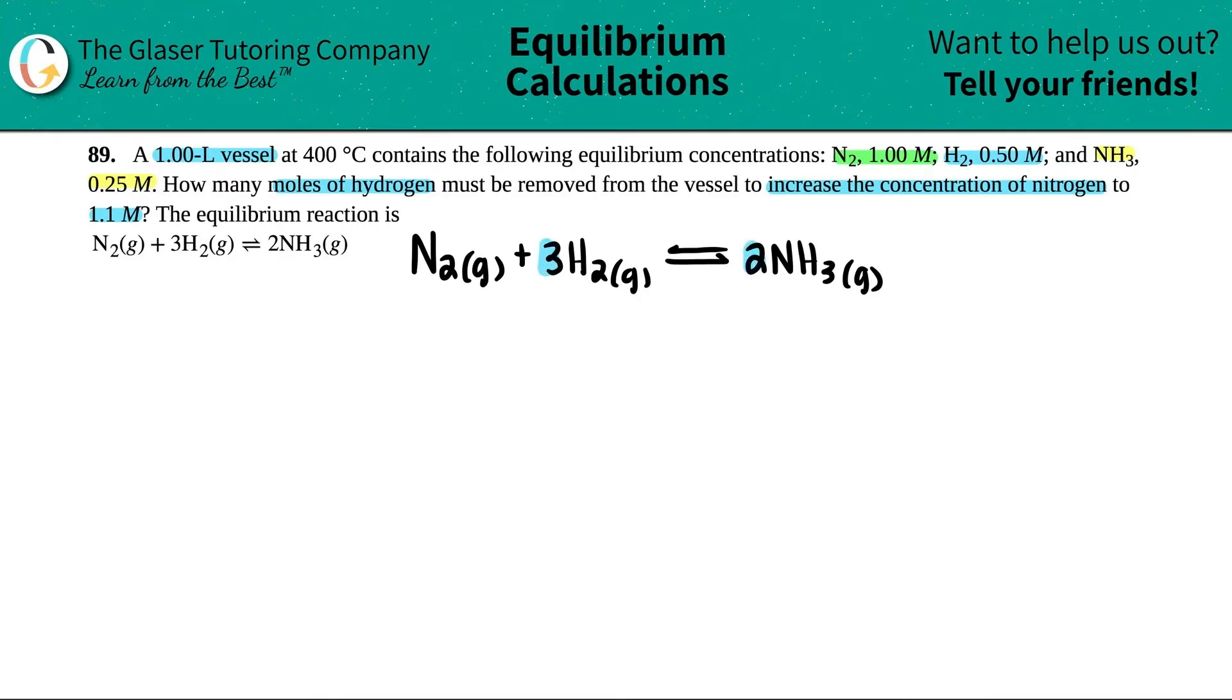I already see that we have coefficients here, so this is going to be a balanced equation. Since we're dealing with equilibrium and they gave us equilibrium concentrations, what's the K value? They didn't give us a K value. So the first thing is we have to find out what that K value is. Since they're talking to us in terms of molarity, we can easily find out the Kc. The Kc values come from the equilibrium values. They're already setting us all up. They're saying it has the following equilibrium values. N2 was 1.00 molarity, H2 was 0.50 molarity, and NH3 was 0.25 molarity.